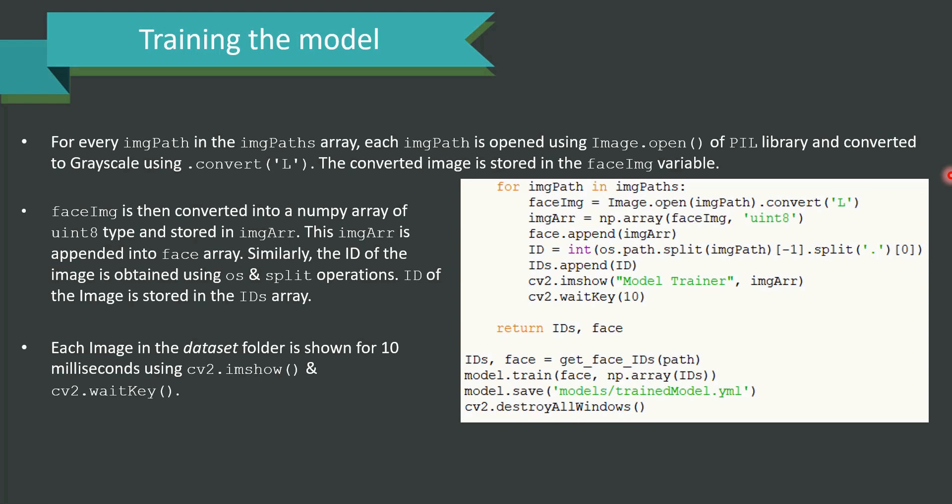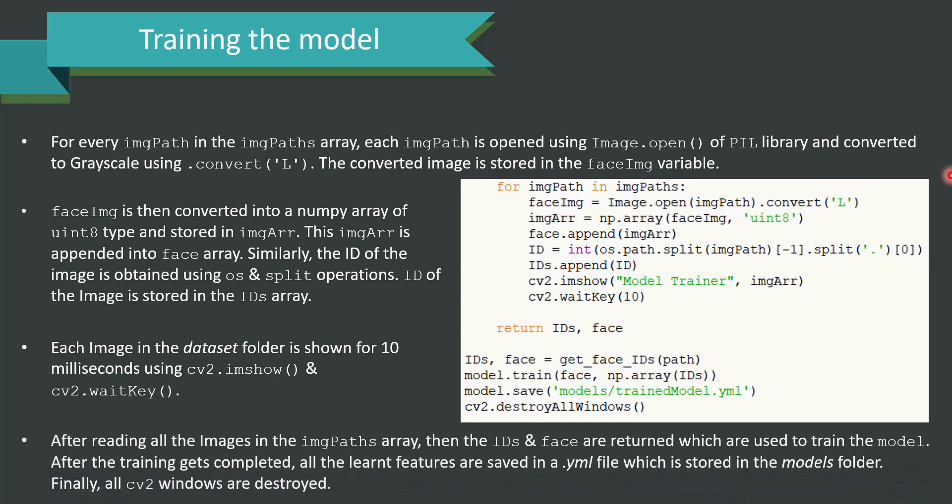Each image in the dataset folder is shown for 10 milliseconds using cv2.imshow and cv2.waitkey. After reading all the images in the image_paths array, then the ids and the face are returned which are used to train the model. After the training gets completed, all the learned features are saved in a .yml file which is stored in the models folder. Finally, all cv2 windows will be destroyed.